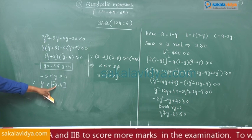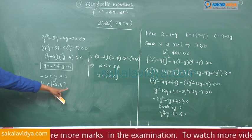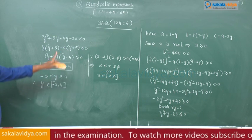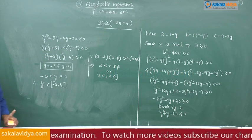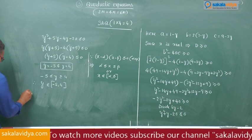Here −5 is the minimum value and 4 is the maximum value. Since we are asked for the maximum value, the maximum value is equal to 4.